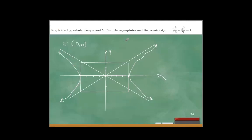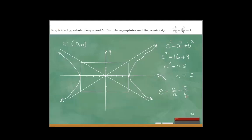For eccentricity, c² = a² + b² = 16 + 9 = 25, so c = 5. Eccentricity e = c/a = 5/4, which is greater than 1, confirming this is a hyperbola (not an ellipse, which would require e < 1). The asymptotes are y = (3/4)x and y = −(3/4)x.